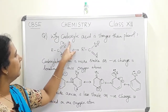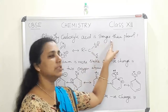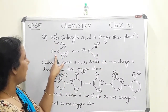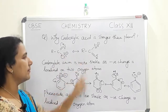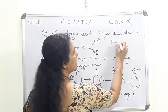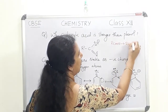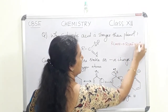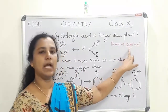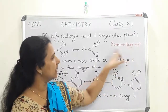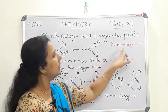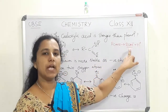Let us see one question: why is carboxylic acid stronger than phenol? We know that RCOOH ionizes to produce RCOO⁻ and H⁺, forming the carboxylate anion. This carboxylate anion is resonance stabilized.